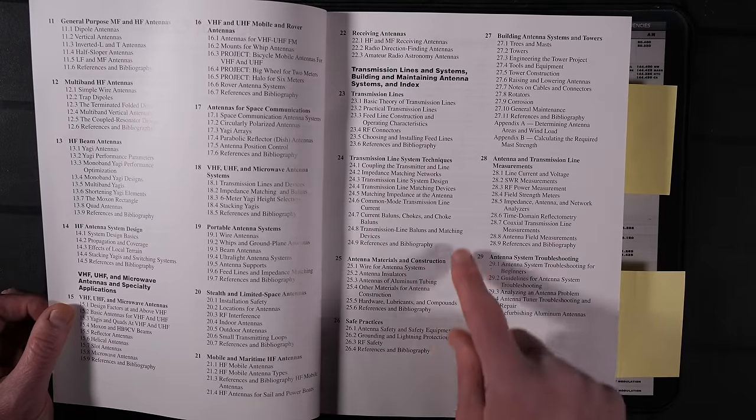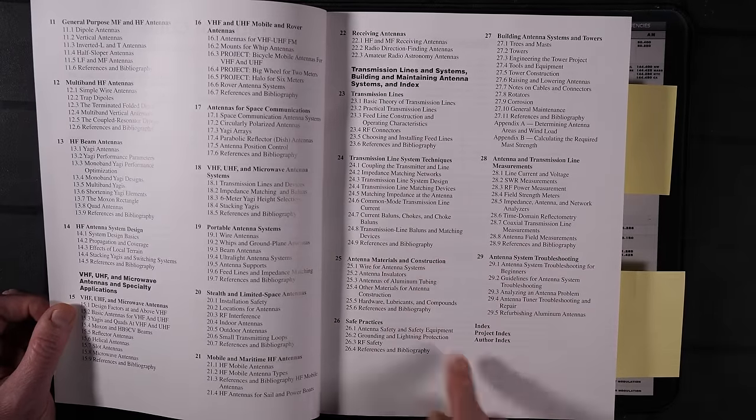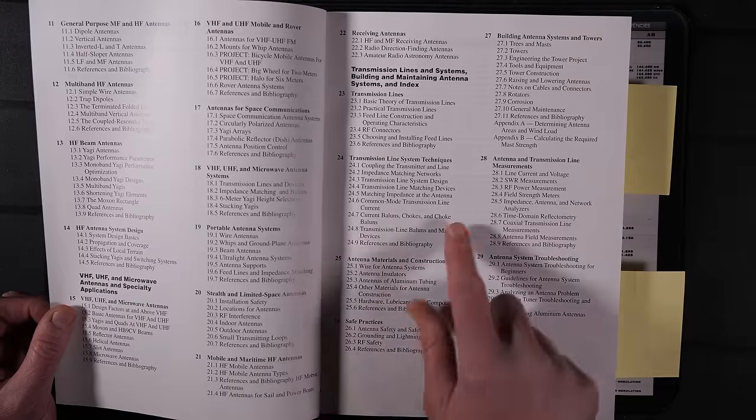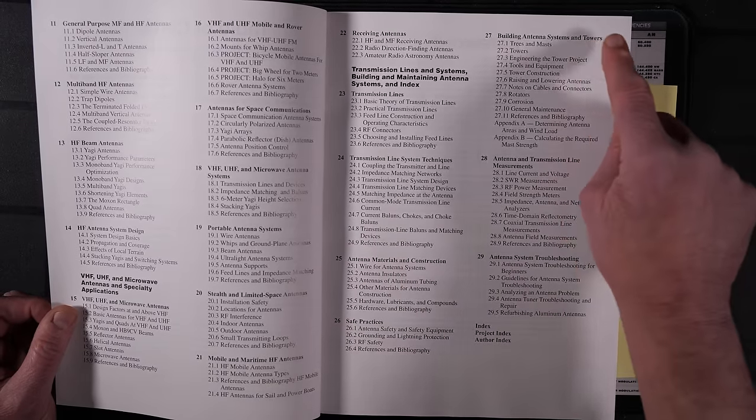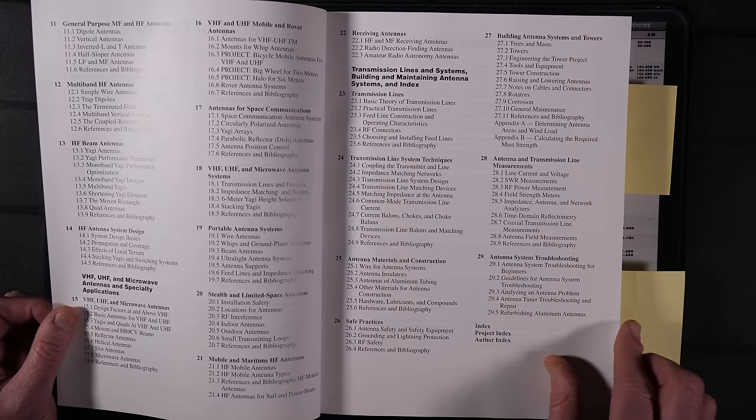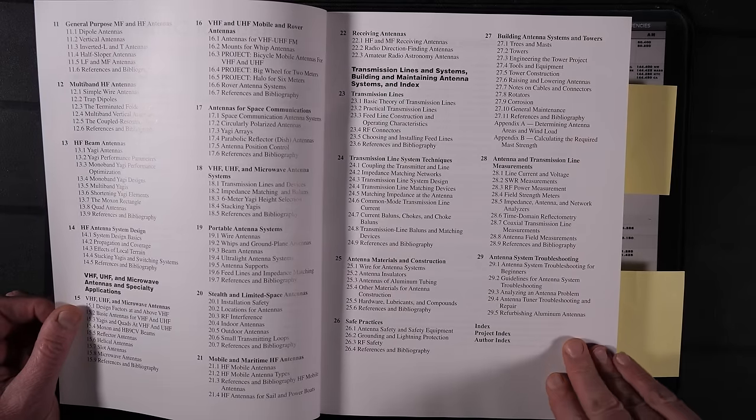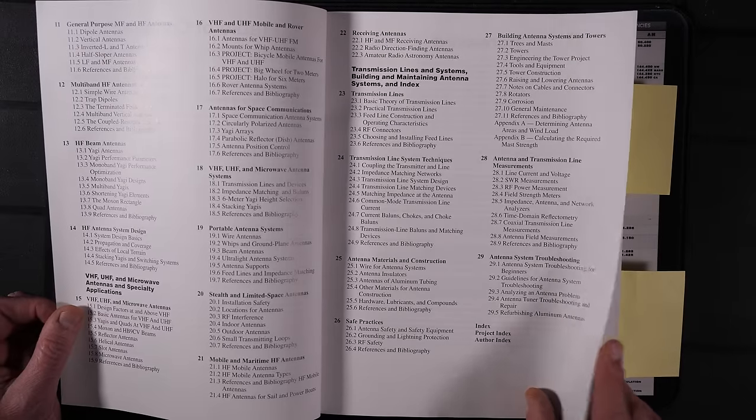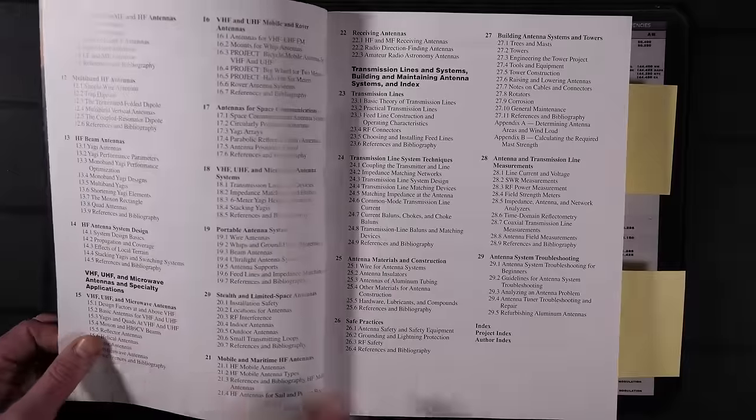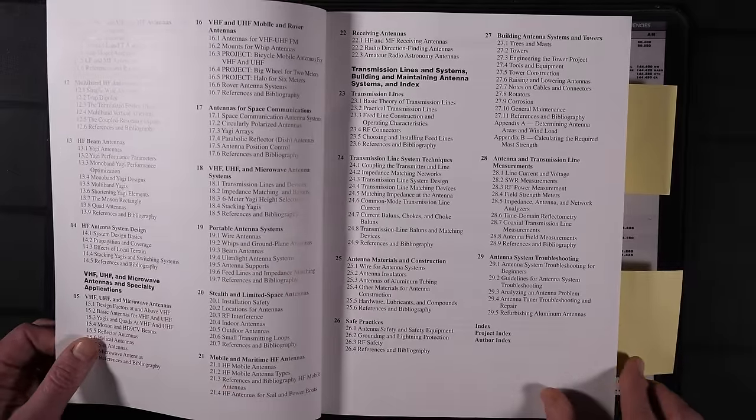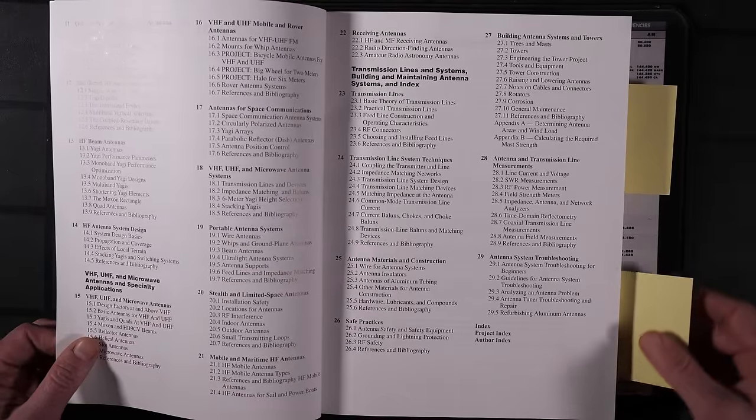Antenna system design. There's a big section on VHF, UHF, and microwave antennas. Separate chapters on those, including portable antenna systems, mobile, stealth, or limited space, and then transmission lines and system building. Transmission lines, matching systems, including balance, chokes, choke balance, antenna material construction, safe practices, building antenna systems and towers, transmission line measurements, and antenna troubleshooting. So, it gives you a pretty in-depth idea of the content of this book.